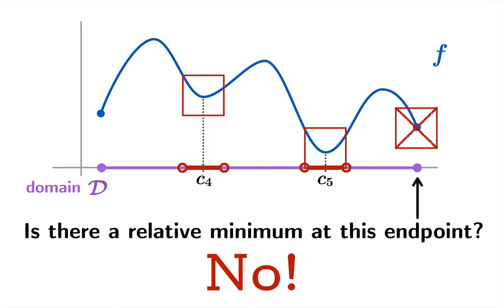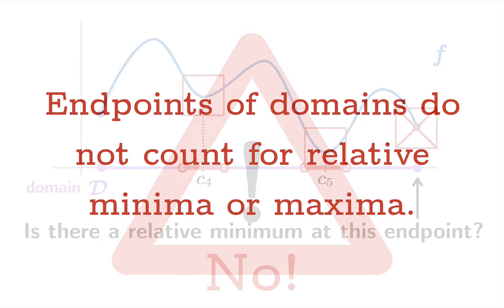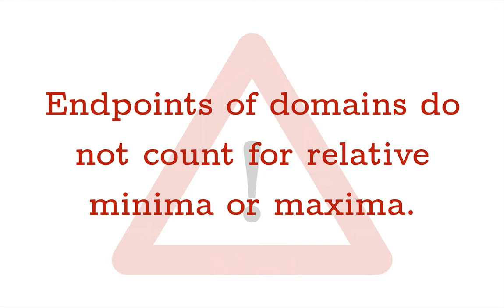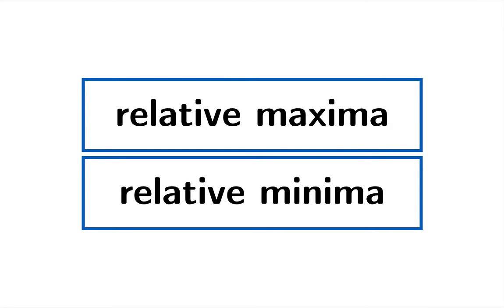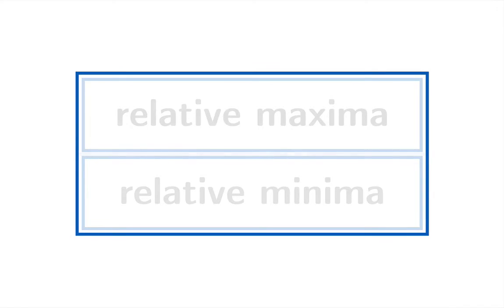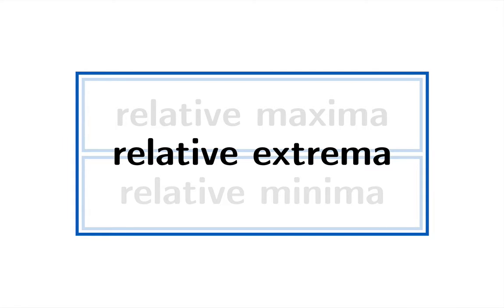Some textbooks or teachers do count endpoints as relative extrema, and you'll have to negotiate that if you run into it. But in this course, endpoints do not count as relative minima or maxima. Taken together, relative maxima and relative minima can be called one thing — relative extrema. When we refer to relative extrema, we mean either maxima or minima.